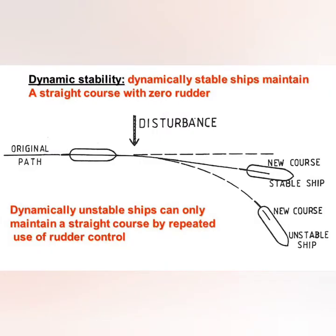Let's try to understand it using this diagram. This is the ship which was on its original path and then there was a disturbance. The rudder was used, and later once the ship started turning, the rudder was put amid ship. A stable ship would then follow along a new course and go straight, as you can see on the right hand side — the top one is the stable ship going straight on the new course. If the ship is unstable, it takes the path shown at the bottom right, continuously maintaining a residual rate of turn. Thus, a dynamically unstable ship can only maintain a straight course by repeated use of rudder control.